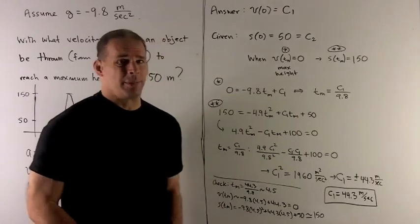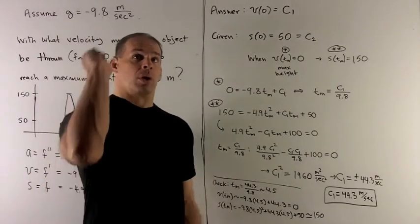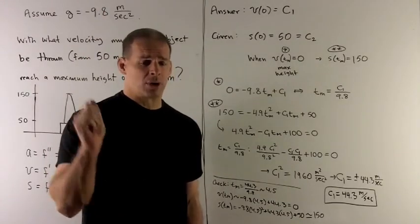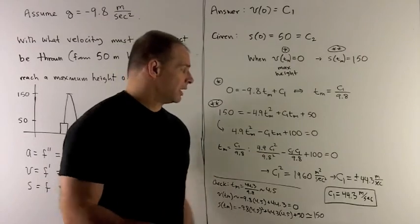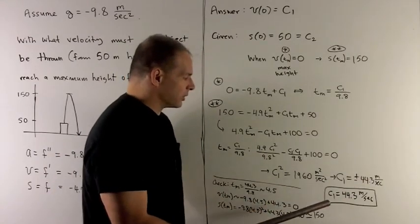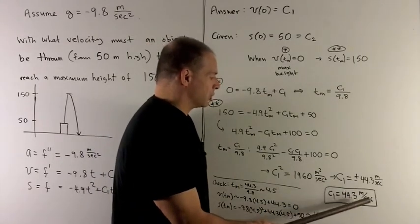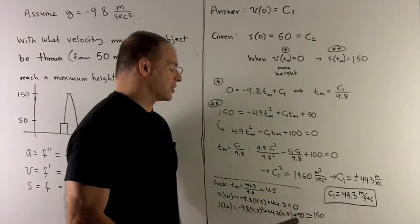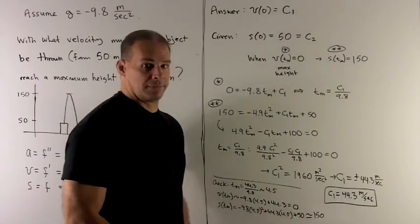Now note, we only want the positive one. We're asking for a maximum height, which means we're throwing it up. If I throw it straight down, the maximum height is actually going to be the point where I'm throwing from. So I throw away the negative solution, and we're left with the solution c1 = 44.3 m/s. And so that's my answer. That's the velocity that gets me a maximum height of 150 meters.